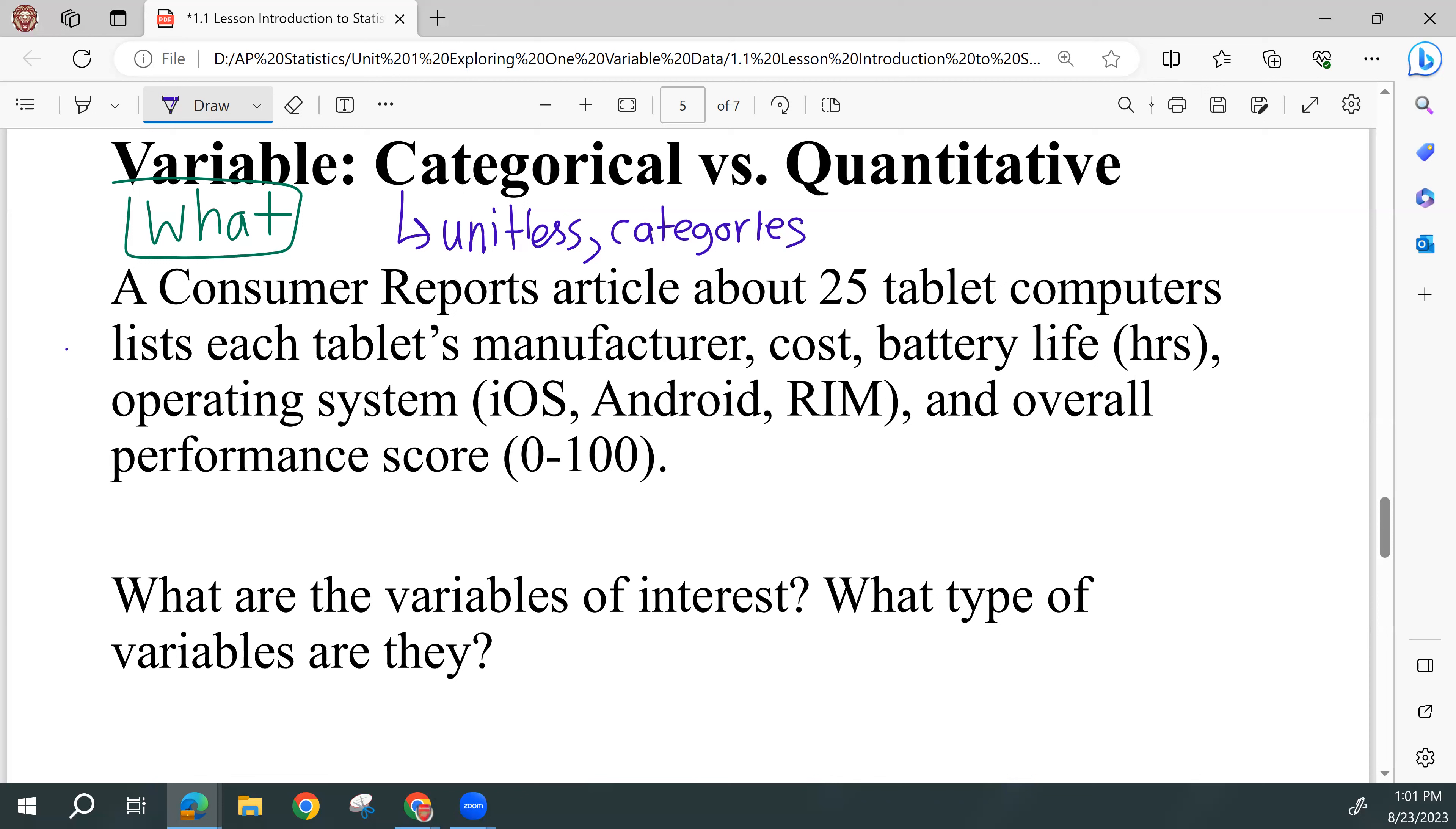And they can be put into categories. One of the easiest examples that you might connect to is your level in high school: freshman, sophomore, junior, senior. Those are categories. You can place people into those categories. There are no units. That is a categorical variable. If we want to know what grade level you're in, that's a categorical variable.